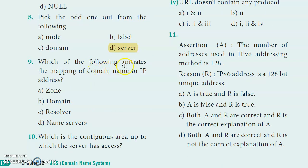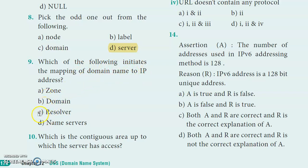Ninth question: Which of the following initiates mapping of domain name to IP address? The answer is option D - resolver, which initiates the mapping of domain name to IP address.